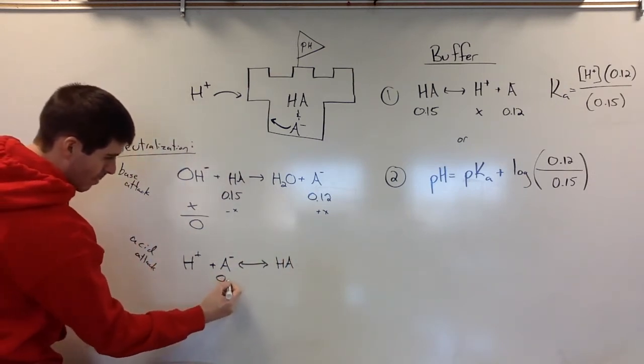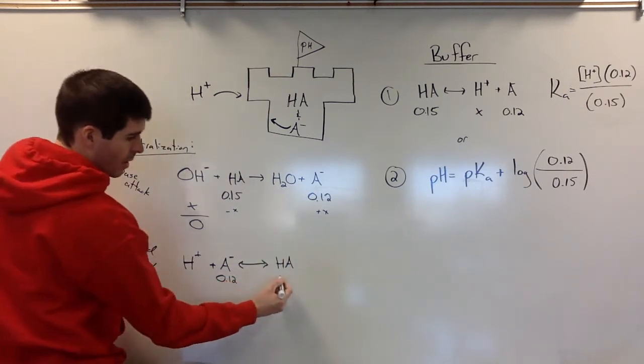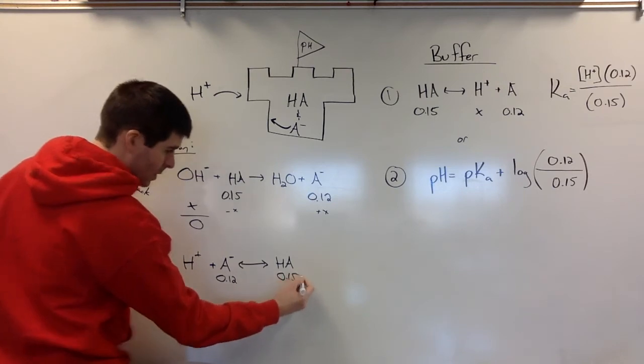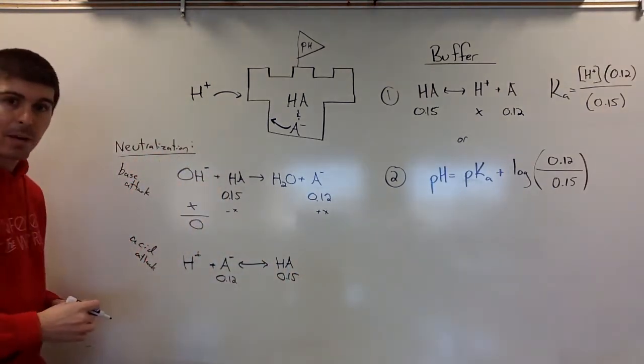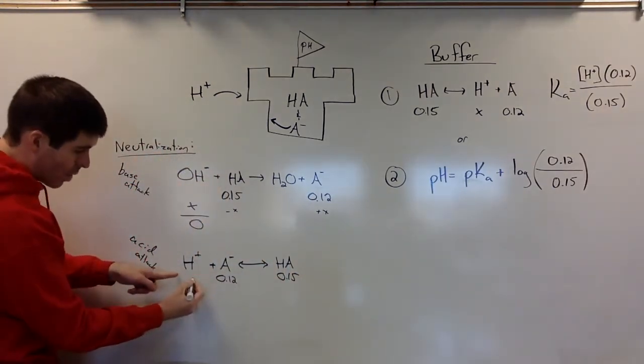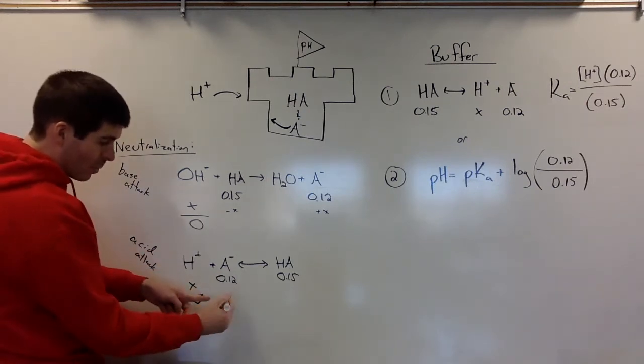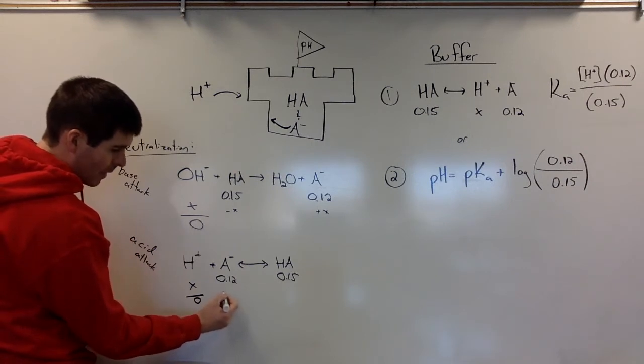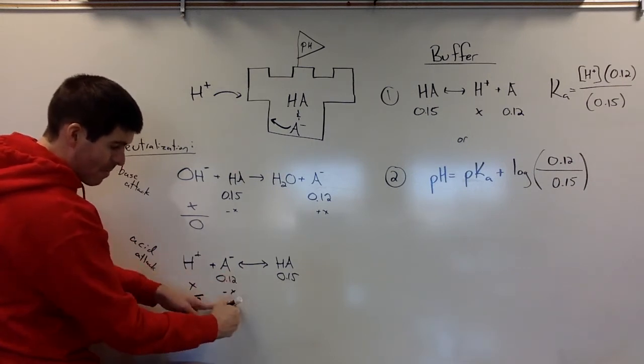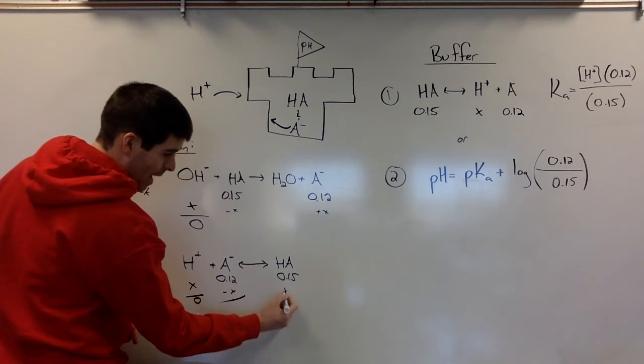So here again, if we had 0.12 to start with and 0.15, so it's a different problem than the one that we had up there, then we've got as long as this can go down to 0 and get defeated, then at the end we will still have some leftover A-, and we will have some HA.